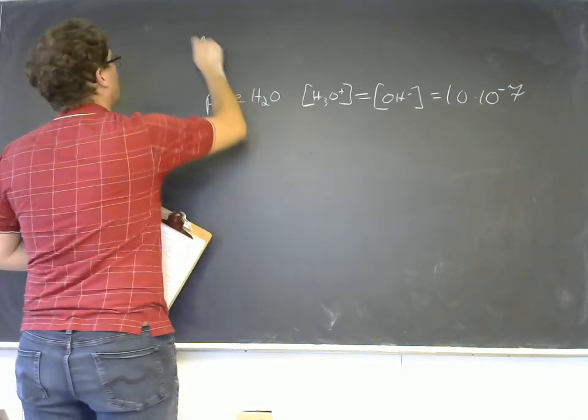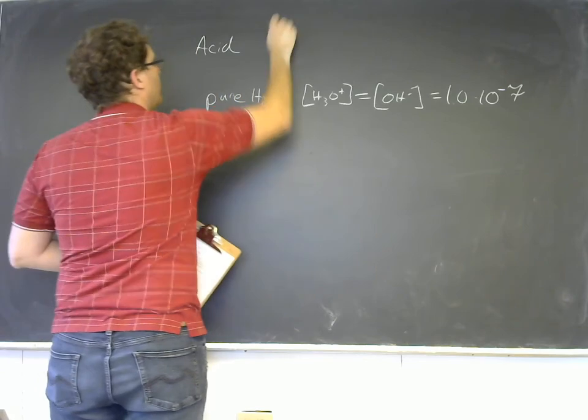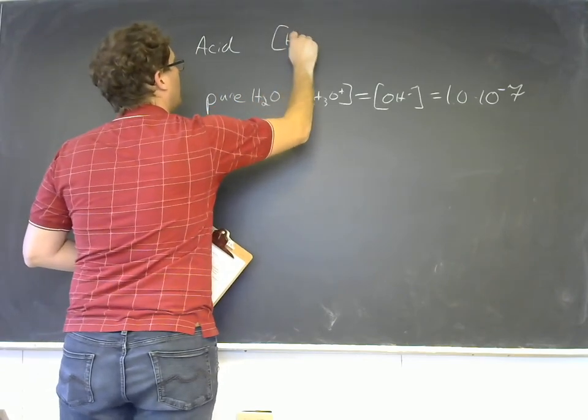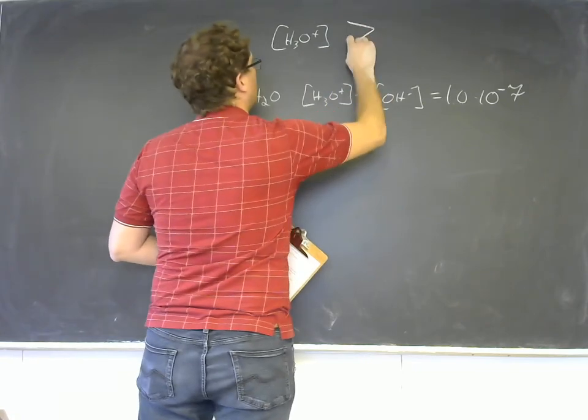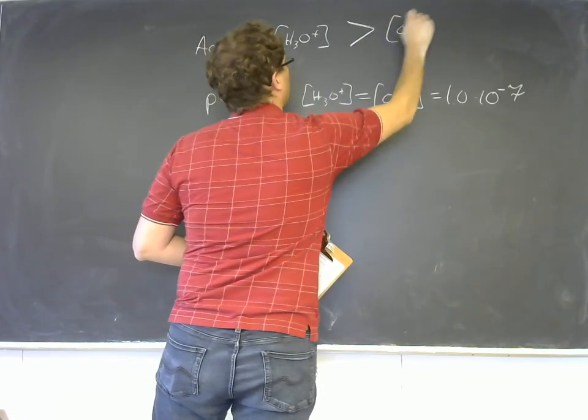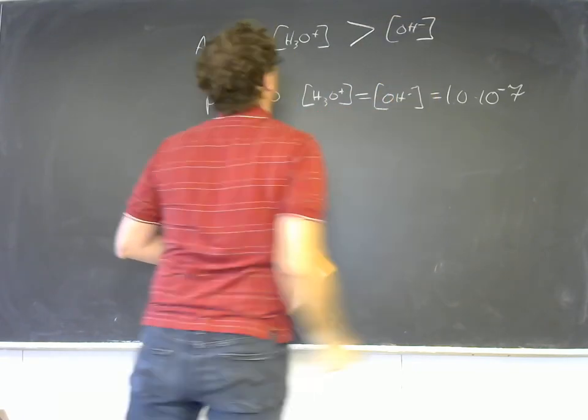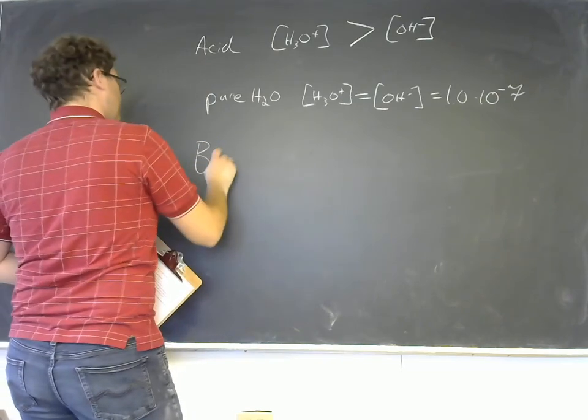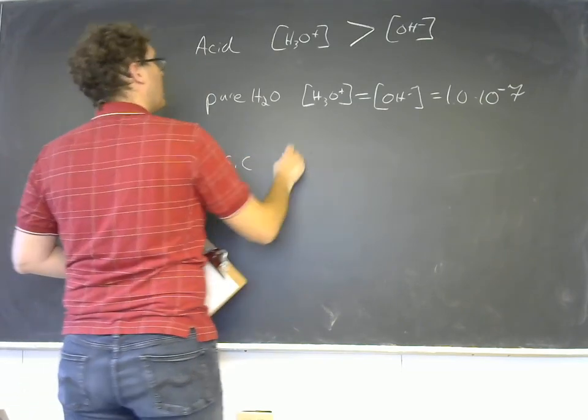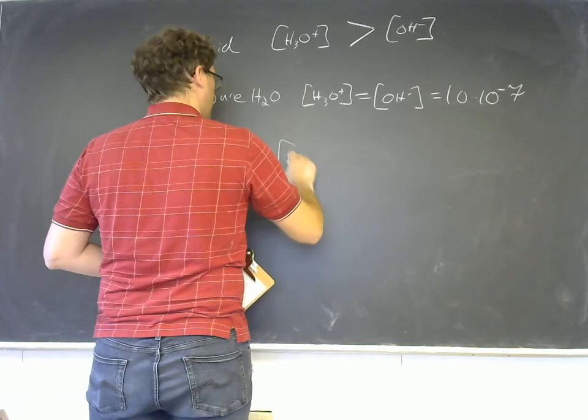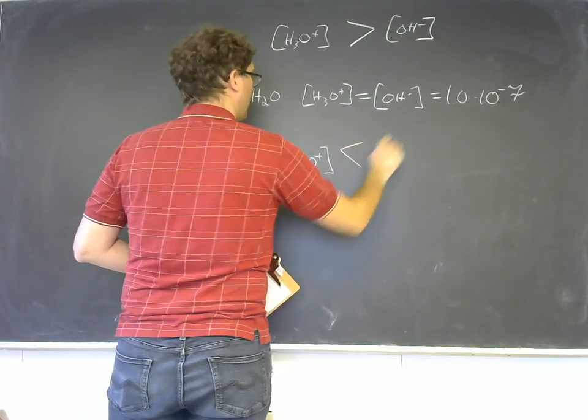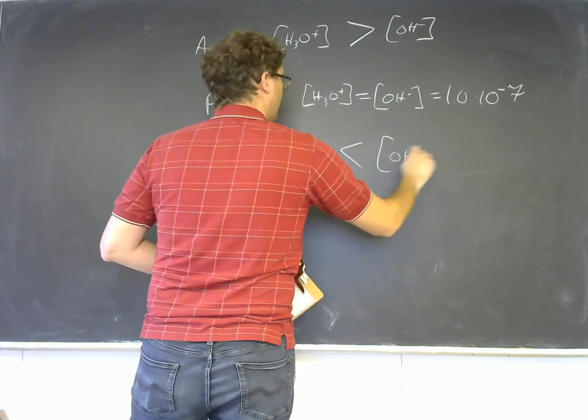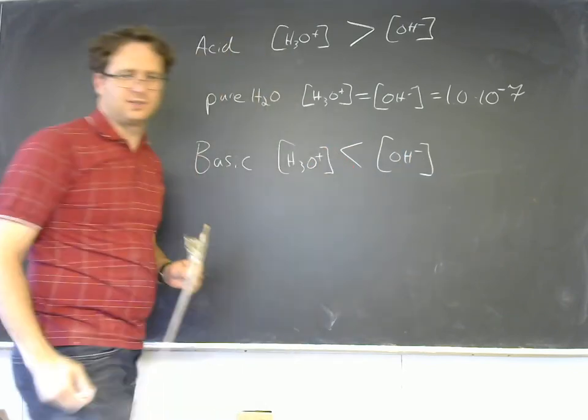And if I have a solution that is acidic, then the H3O plus concentration is going to be greater than the OH minus concentration. And if I have a basic solution, then I'm going to have the H3O plus concentration less than the OH minus concentration.